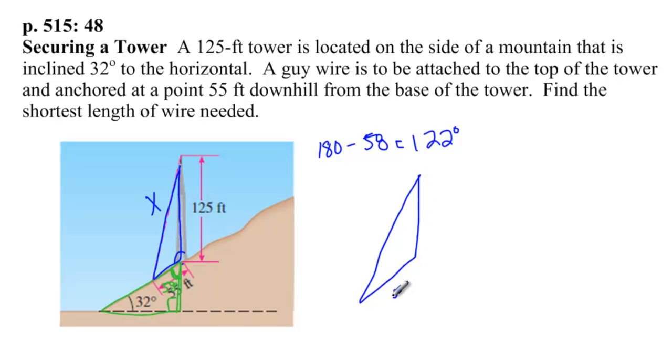What's good now is I have a triangle. I'm going to redraw it out here where this side is 55 feet going down the hill, this side is 125 feet, that's the height of the tower, and then this angle is 122 degrees. I need to figure out x. Simple law of cosines problem.